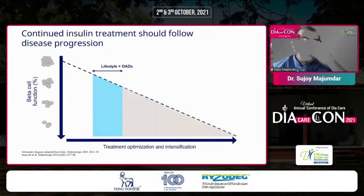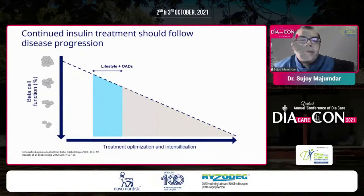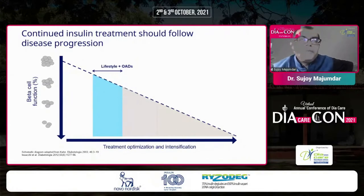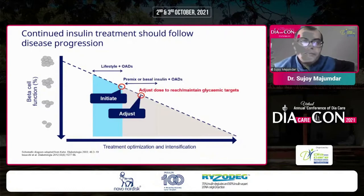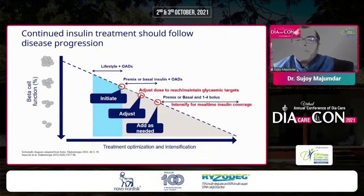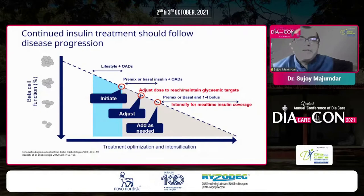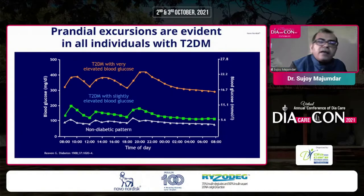Why should continued insulin treatment be there? Initially, diabetes management relies on lifestyle and oral agents while beta cell function is adequate. But by the time diabetes is diagnosed, 50% of beta cells are already dysfunctional — not dead, simply not working. Over time, we initiate basal or premix insulin with OADs, and if that doesn't achieve control, we intensify further. Intensification is a part and parcel of chronic diabetes care, because prandial excursions are evident in all individuals with active diabetes.